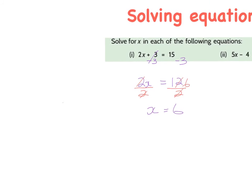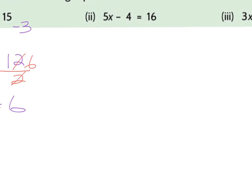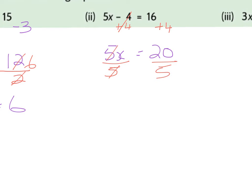The next example is 5x minus 4 equals 16. We're going to try and get rid of this minus 4 first. We need a plus 4 to get rid of it. What I do to one side I must do to the other. My minus 4 and my plus 4 cancel. I'm now left with 5x equals 16 plus 4, which gives me 20. It's very similar to before — I have 5x equals 20. I want to get rid of the 5, so I divide by 5, balancing the whole time. 5 into 5 goes once, so I'm left with x equals — 5 goes into 20 four times. So x is equal to 4.